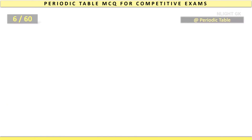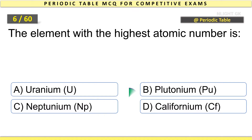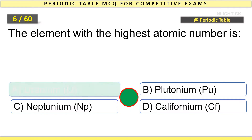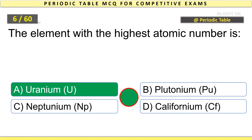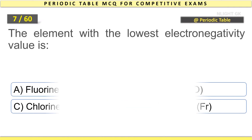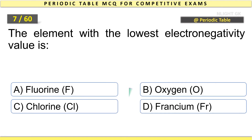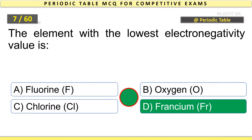The element with the highest atomic number is Uranium. The element with the lowest electronegativity value is Francium.